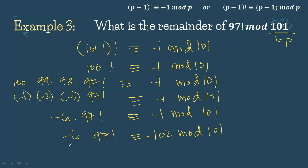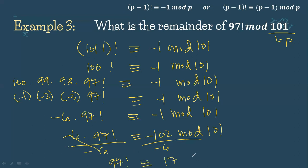We divide both sides by negative 6, because negative 6 and negative 102 are both divisible by 6. So negative 102 divided by negative 6 is 17. Therefore, 97 factorial is congruent to 17 mod 101. The remainder of 97 factorial mod 101 is 17.